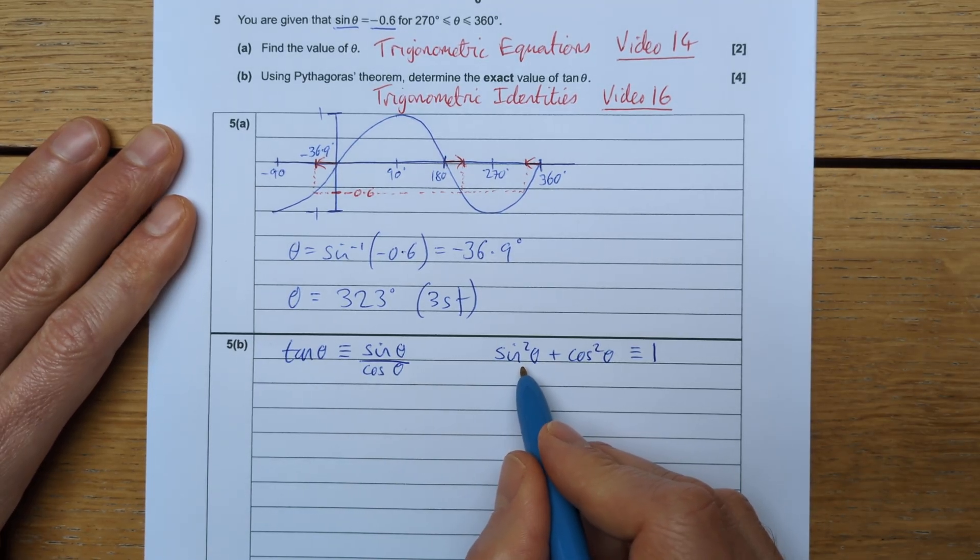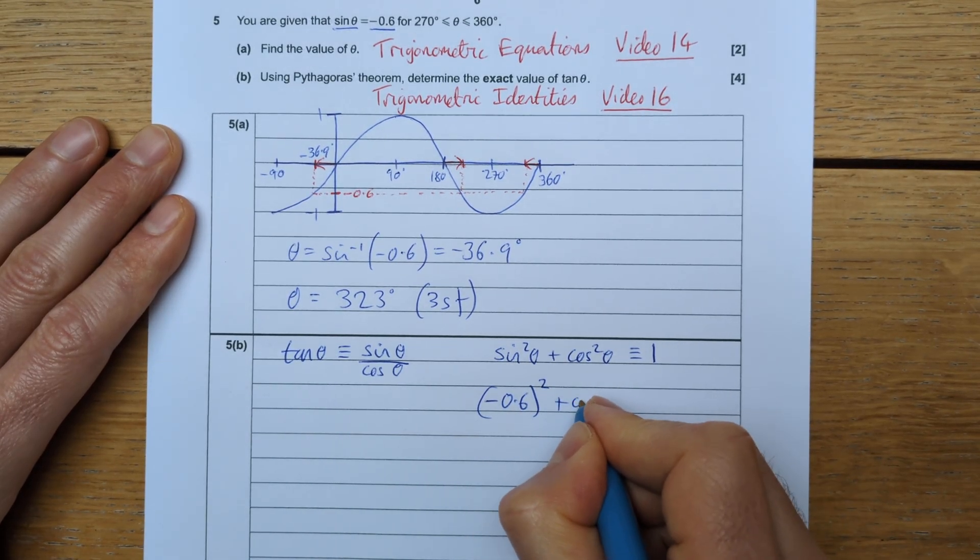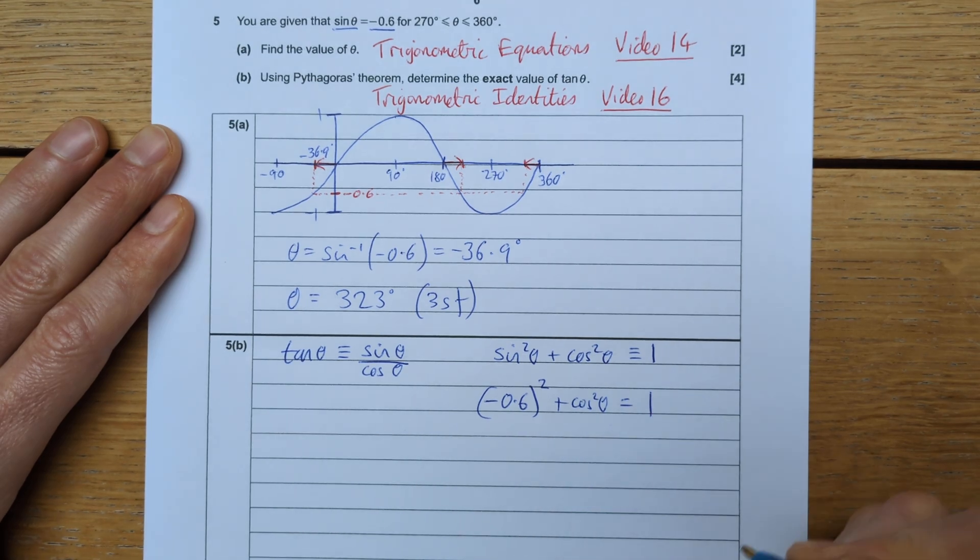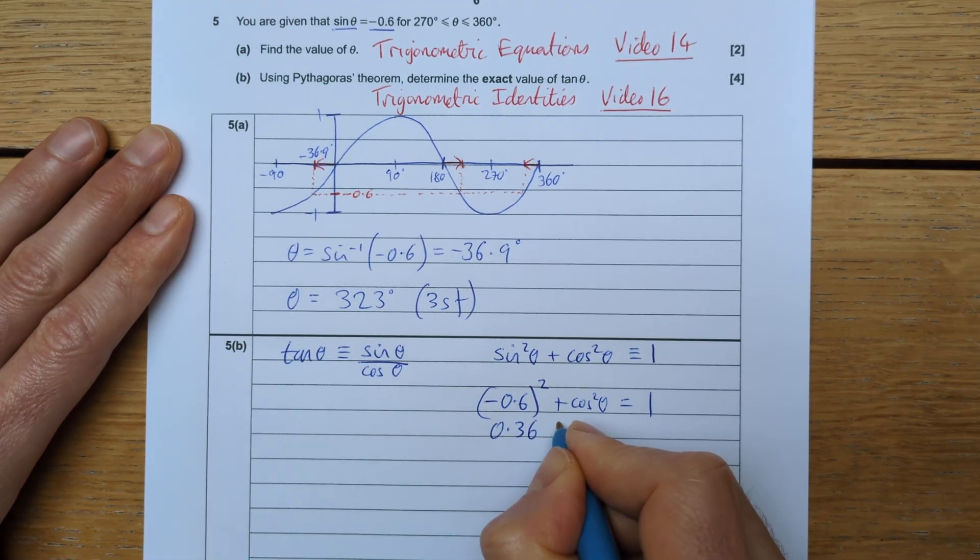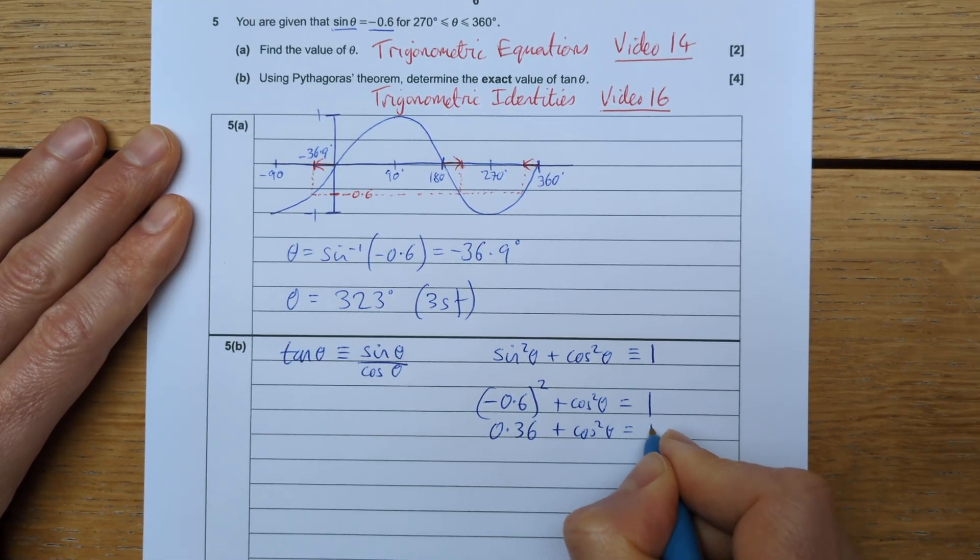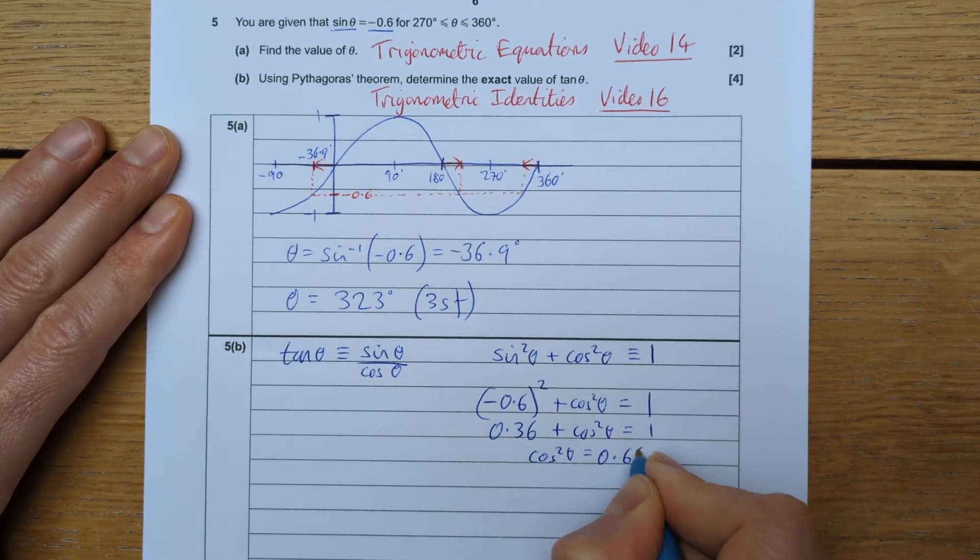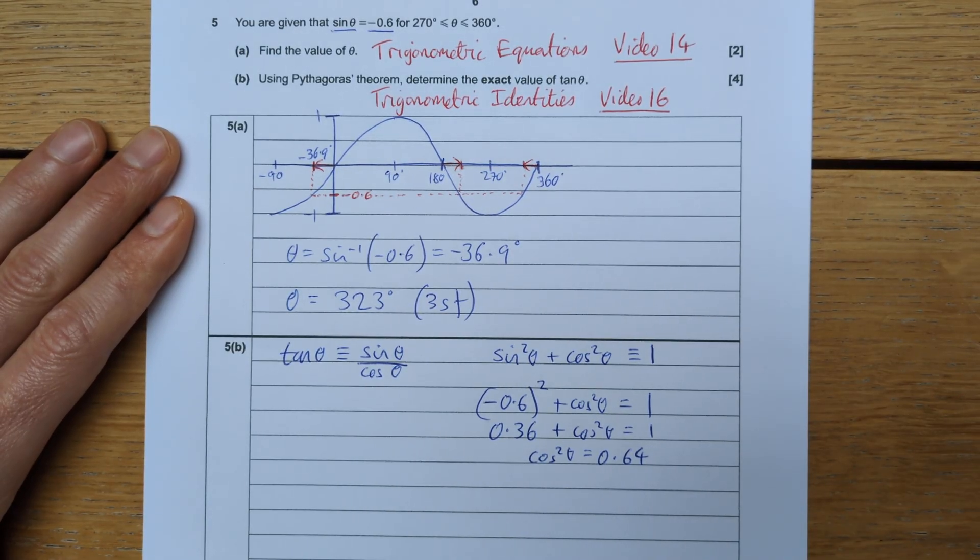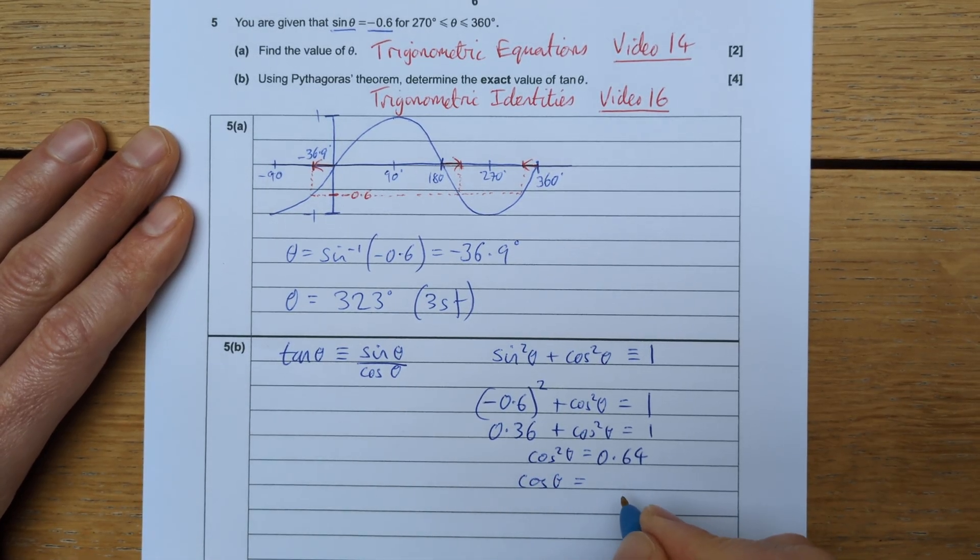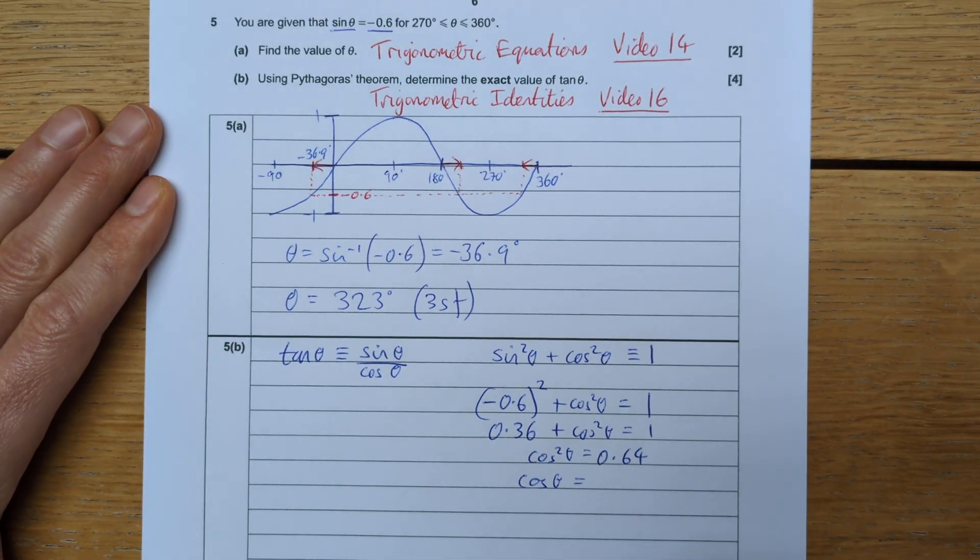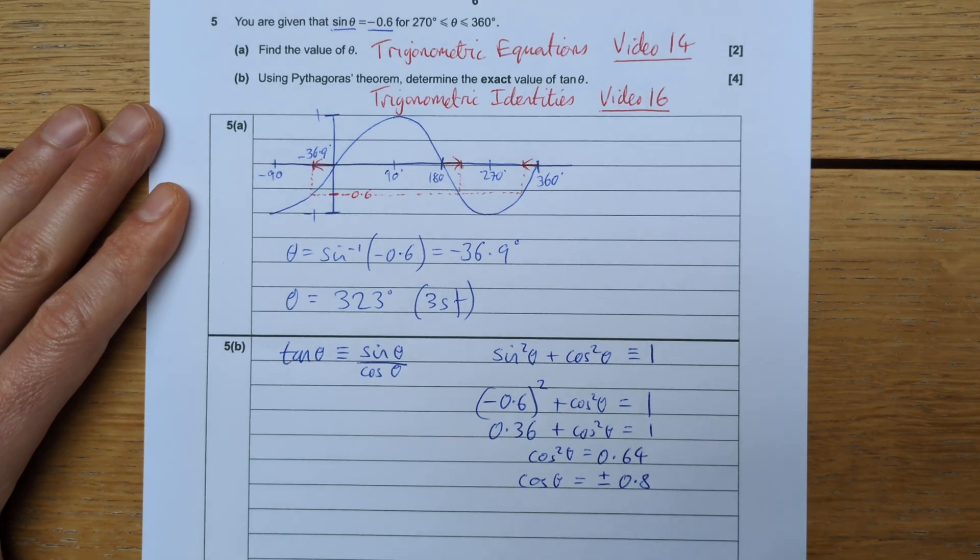Okay, so we know that sine theta is negative 0.6. So in this question, we're doing negative 0.6 squared plus cosine squared theta is equal to one. Negative 0.6 squared is 0.36. And therefore, cosine squared theta is equal to 0.64. Now some of you might think, therefore cosine theta is 0.8, because 0.8 multiplied by 0.8 is 0.64. However, it could be positive or negative 0.8, both of those squared give 0.64.